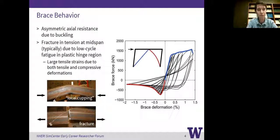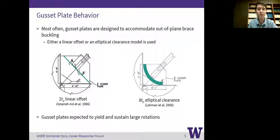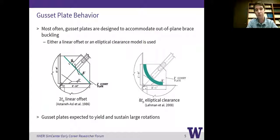Because of the deformation compatibility of the brace section, the walls cave in on themselves, and the corners bulge out at that location, resulting in a really high tensile demand even when the brace is in compression overall. The bottom photo shows the brace after it fractures. While the brace is buckling, we have to design the gusset plate to accommodate that behavior — either a fully restrained gusset plate or, more commonly, a gusset plate allowed to rotate via a linear offset or an elliptical clearance, allowing the gusset plates to yield and sustain those large rotations as the brace buckles out of the plane.